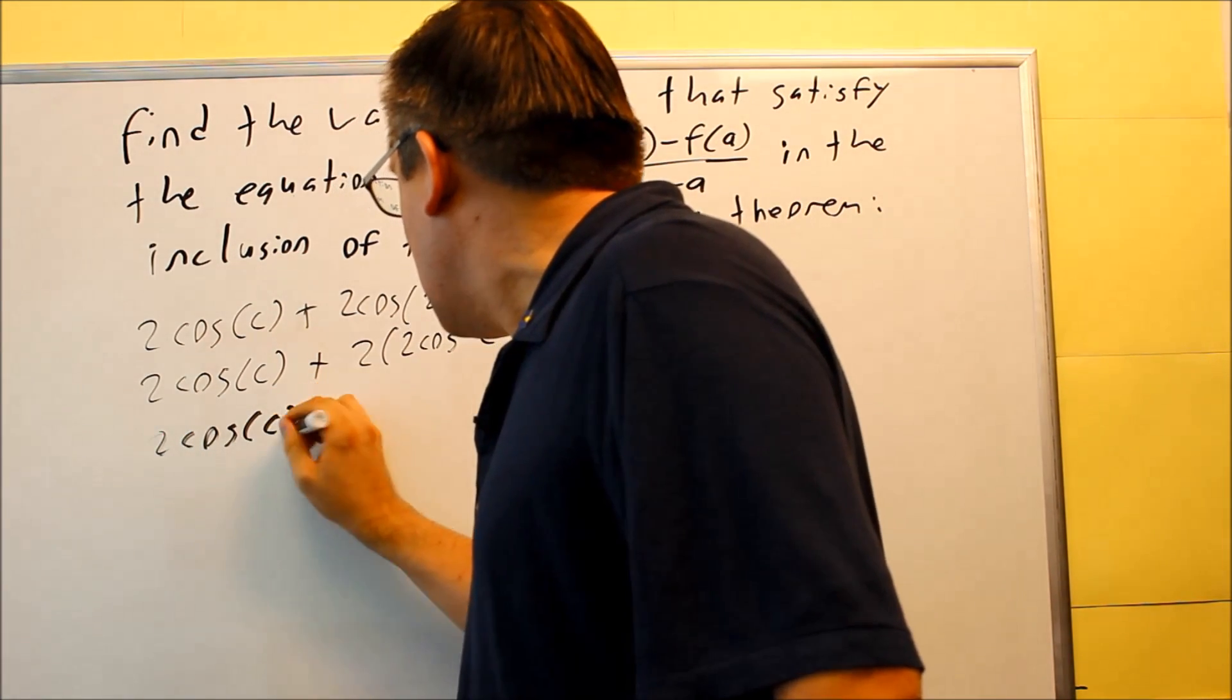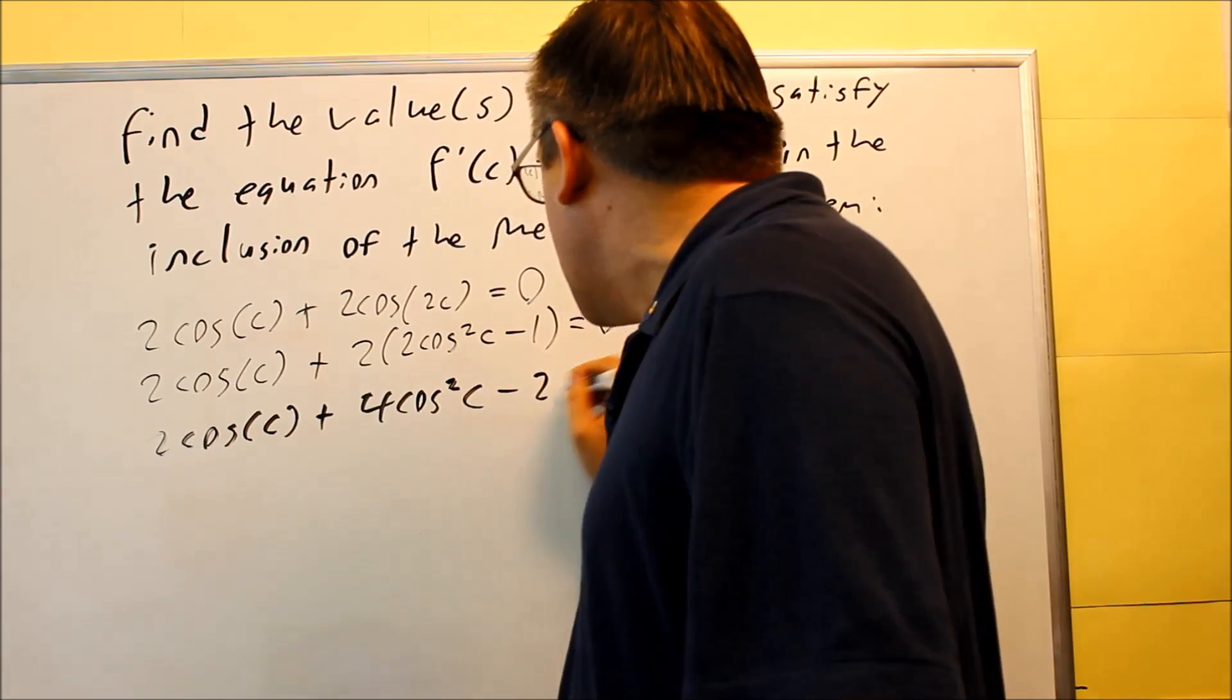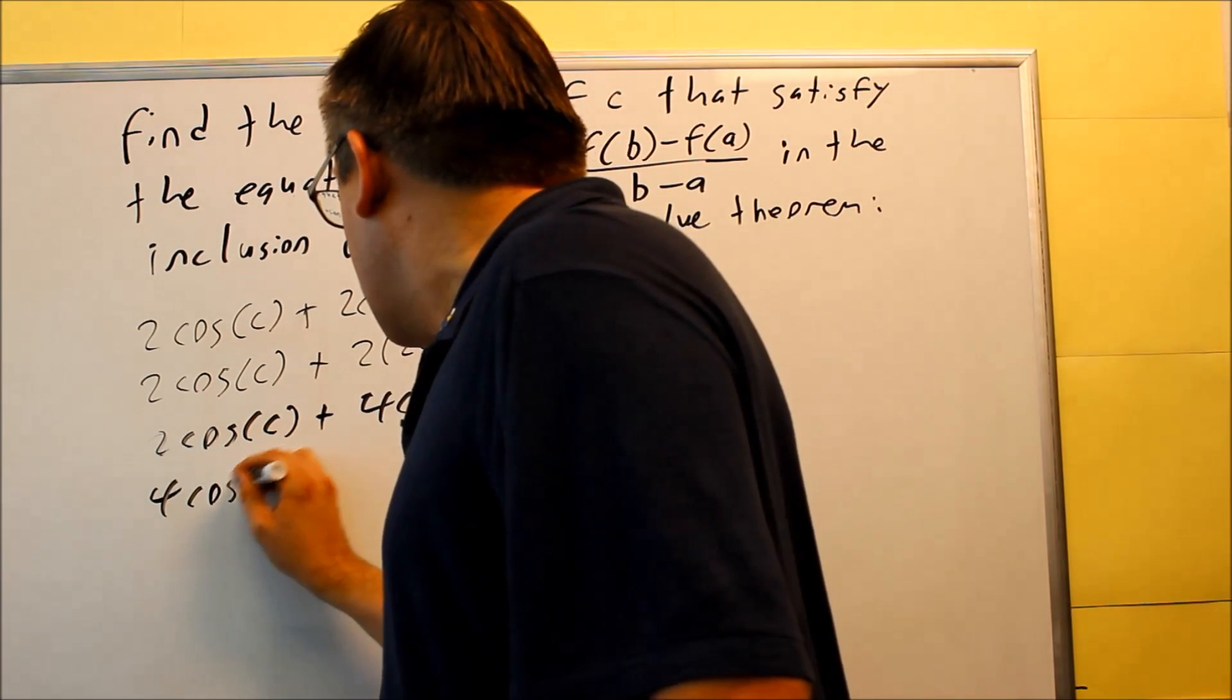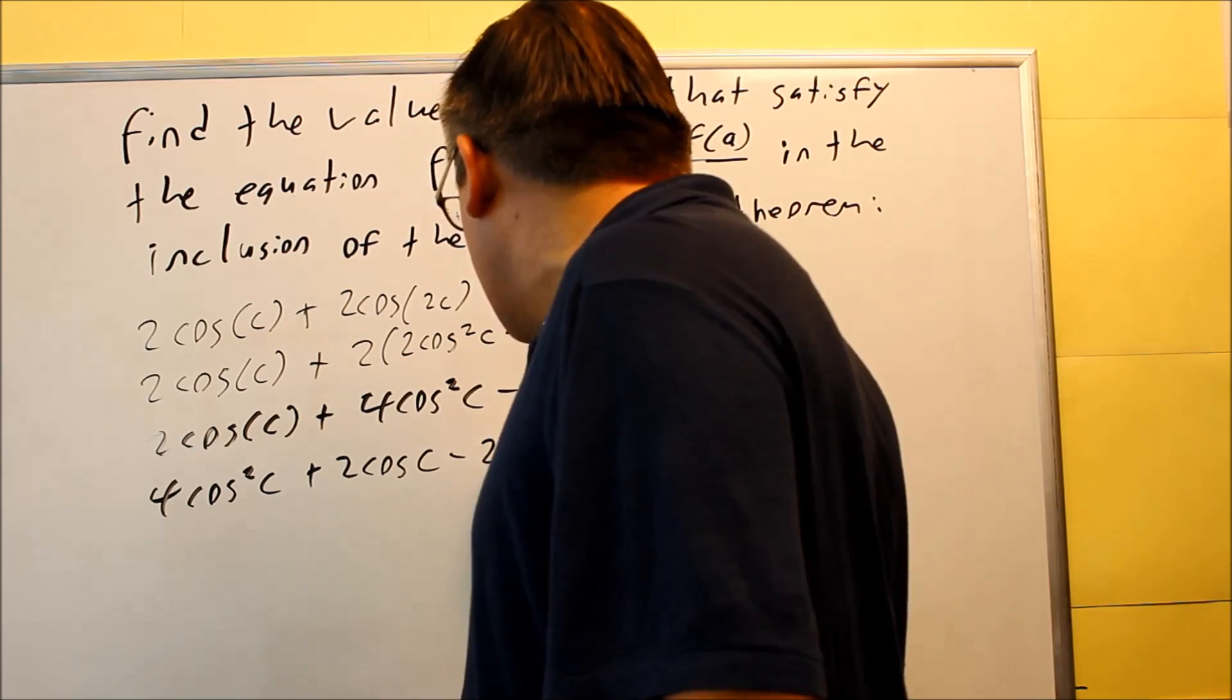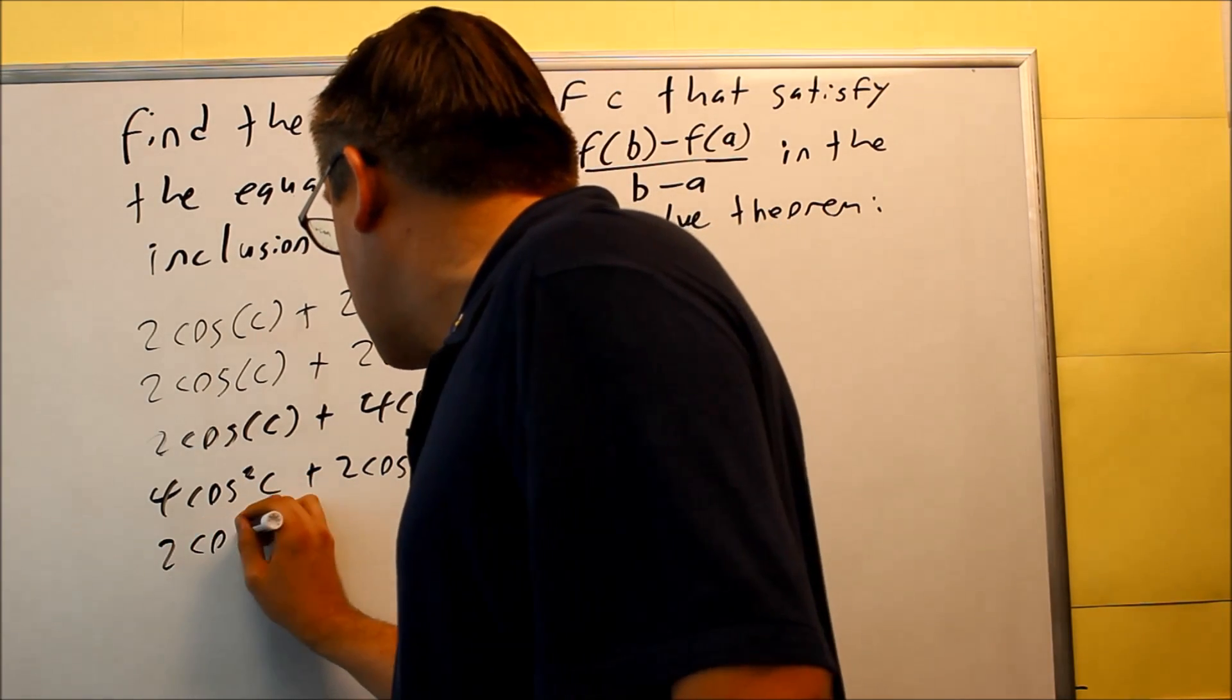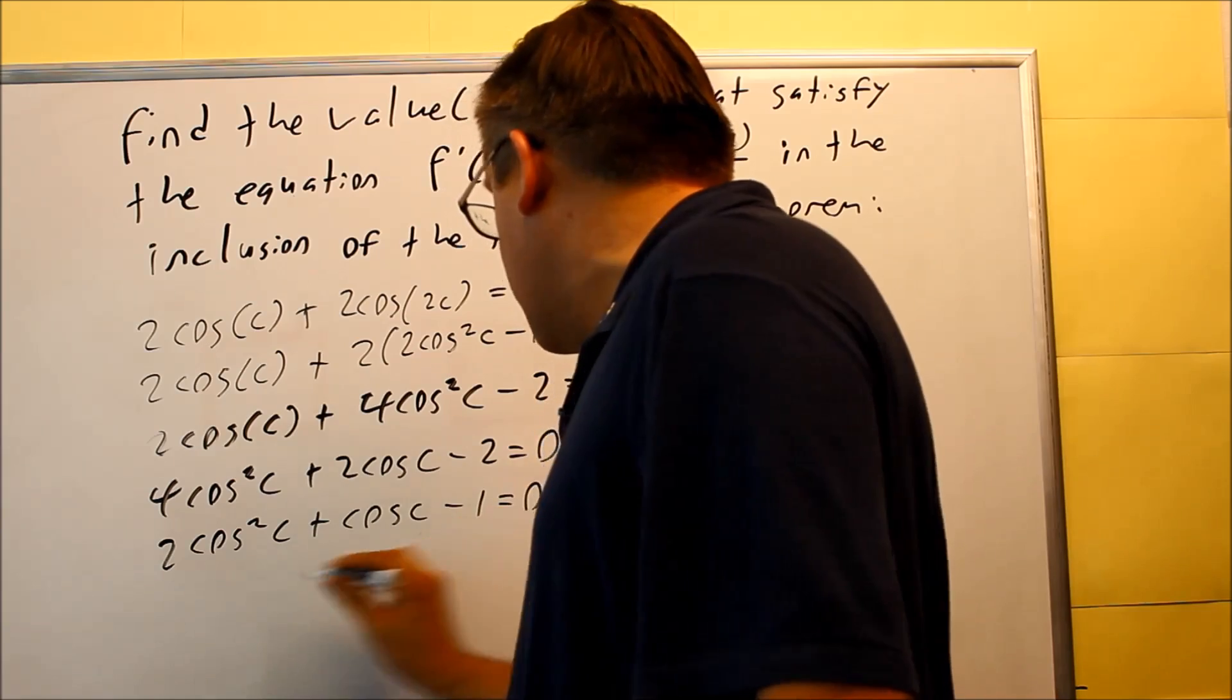So 2cos(c) + 4cos²(c) - 2 = 0. We're going to rearrange the order here: 4cos²(c) + 2cos(c) - 2 = 0. We can divide all this by 2. So 2cos²(c) + cos(c) - 1 = 0.